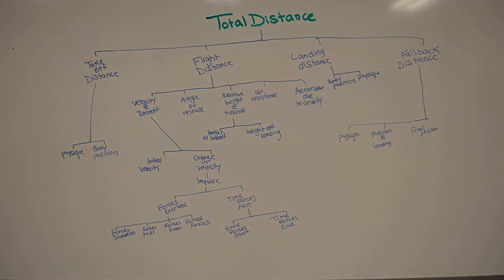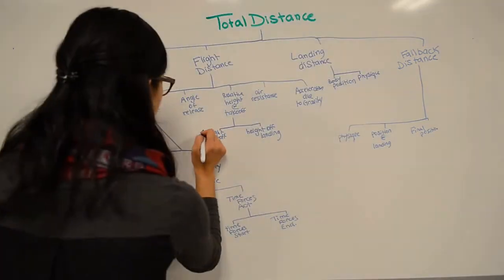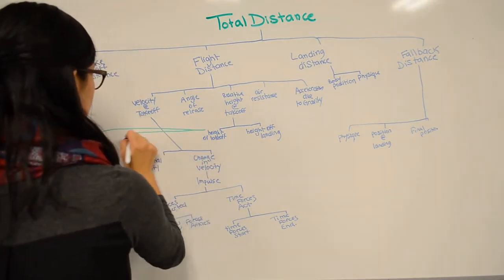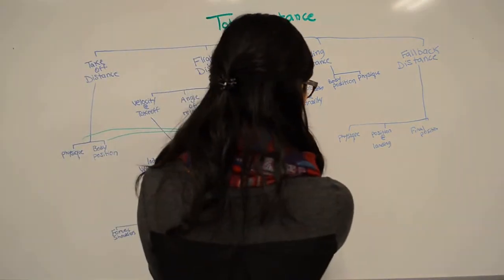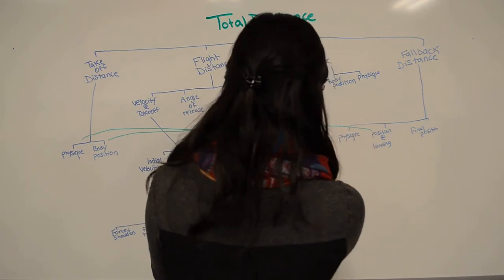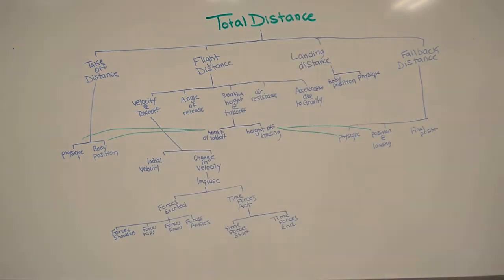Finally, before we use the model to evaluate performance, it's important to realize how some of the variables are related. For example, the height at takeoff and landing are related to the physique and body position connected to the takeoff distance and fallback distance.